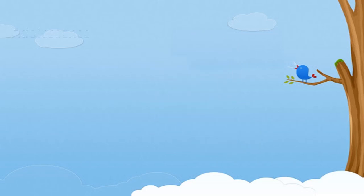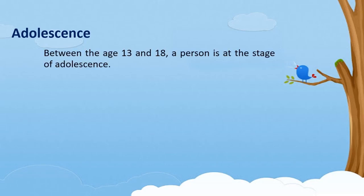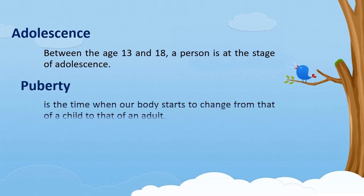The third stage of human growth and development is adolescence. Between the ages of 13 and 18, a person is at the stage of adolescence. It is considered the transitional stage from childhood to adulthood. Adolescence is normally associated with puberty.